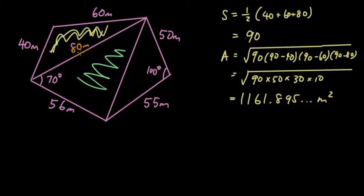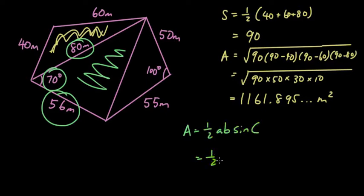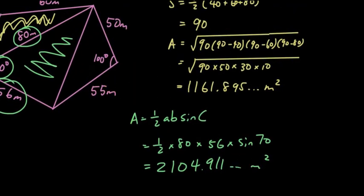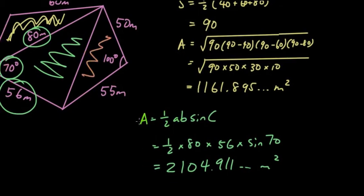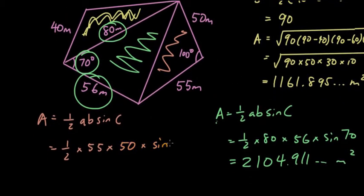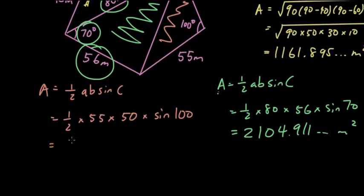Again, we have, actually we can use the sine area rule. So we got A, B and C. So area equals half AB sine C. So that's half times 80 times 56 times sine 70. Put all that into the calculator. And the answer is 2,104.911 dot dot meter squared. And then the third area, using a different colour again. Area equals half AB sine C. So that's half times 55 times 50 times sine 100. And then that will tell us it's 1,354.11 dot dot meter square.